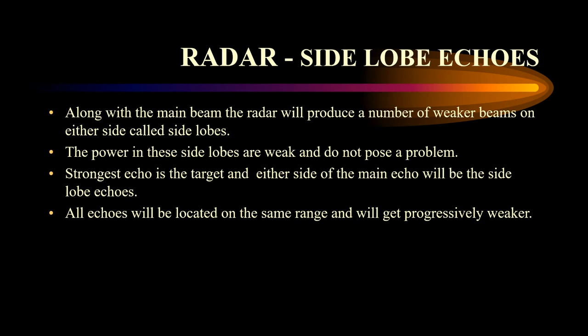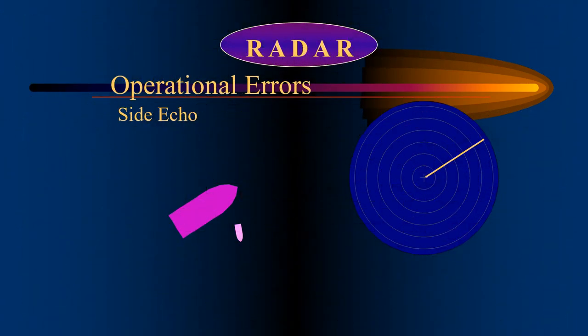Side lobe echoes: as well as the main beam, the radar produces a number of weaker beams on either side called side lobes. Normally these beams do not cause a problem as the transmitted energy from them is very weak. However, when very strong targets are close to the antenna, echoes can be detected from the side beams. The strongest echo is the actual target and either side of the main echo are side echoes which have the same range but are progressively weaker as the bearing increases or decreases from the actual target.